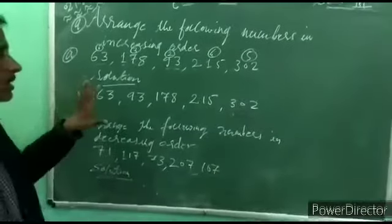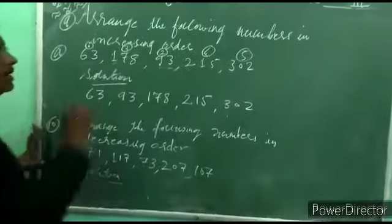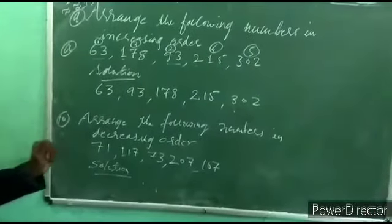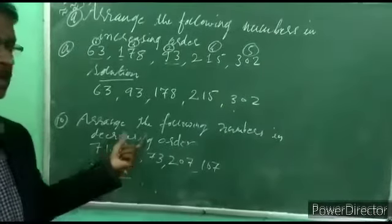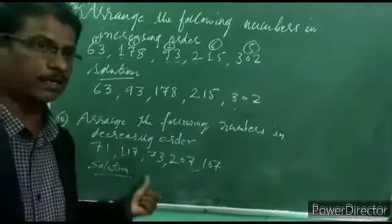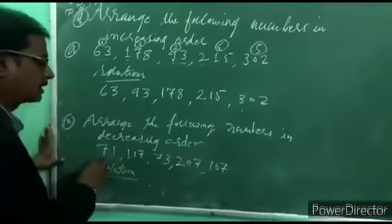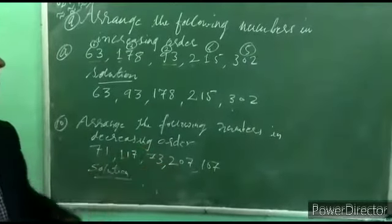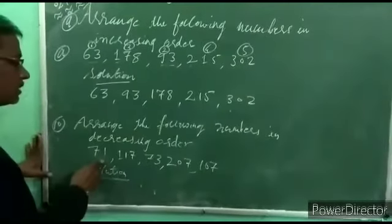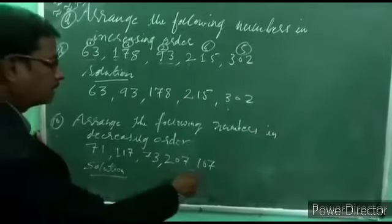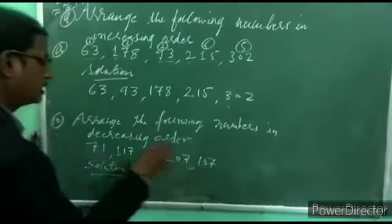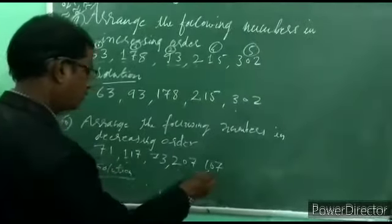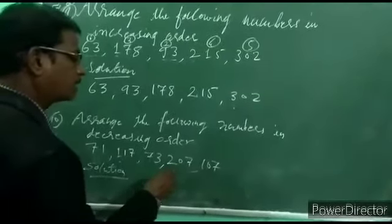Now for decreasing order — we take numbers from greatest to smallest. Total 5 numbers are given: 71, 117, 73, 202, 107. Look: 71 and 73 are 2-digit numbers; 117, 202, and 107 are 3-digit numbers. From the 3-digit numbers, compare the hundreds place: 1, 2, and 1. 2 is the biggest, so 202 comes first.